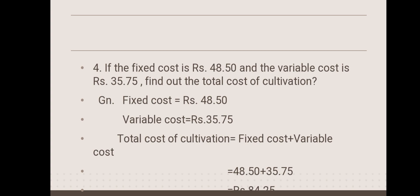Next is a numerical problem: if the fixed cost is rupees 48.50 and the variable cost is rupees 35.75, find out the total cost of cultivation. Fixed cost is 48.50 and variable cost is 35.75. As we seen before, total cost of cultivation is the sum total of fixed cost and variable cost. Adding these two gives the answer as rupees 84.25.